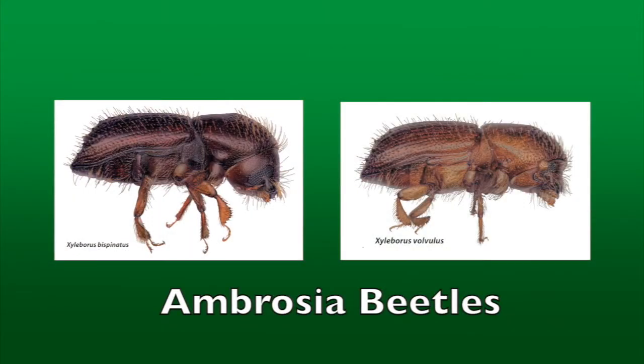Hi, my name is Jonathan Crane. I'm the Tropical Fruit Crop Specialist with the University of Florida IFAS, located at the Tropical Research and Education Center in Homestead, Florida. I'm going to talk about laurel wilt — the disease, the vectors that transmit it, and mostly control tactics. Laurel wilt is caused by a fungal pathogen, transmitted by ambrosia beetles, and affects trees in the laurel family or Lauraceae, both native trees and avocados. It does not affect trees in the citrus, apple, or banana families.